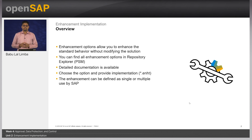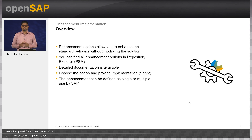The concept is similar to BAdI. An enhancement option is a touch point in an application where the enhancement or exit is possible. You can find all the possible enhancement options released via PSM and available for partners in the repository explorer.